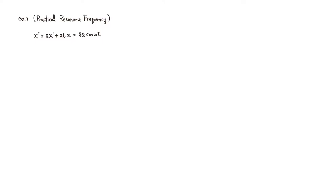Let's look at an example of practical resonance frequency. Here's the equation given: x double prime plus 2x prime plus 26x is equal to 82 cosine of omega t.